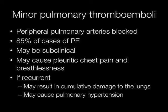In minor pulmonary thromboembolism, it is the peripheral pulmonary arteries that are blocked. This accounts for approximately 85% of cases of pulmonary thromboembolism. The emboli may be subclinical or they may cause pleuritic chest pain and breathlessness. If the emboli are recurrent, there may be cumulative damage to the lungs resulting in pulmonary hypertension.